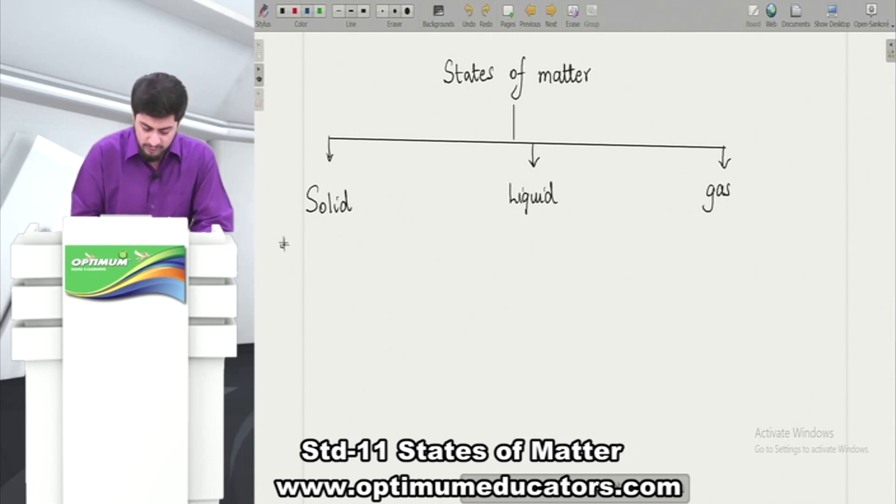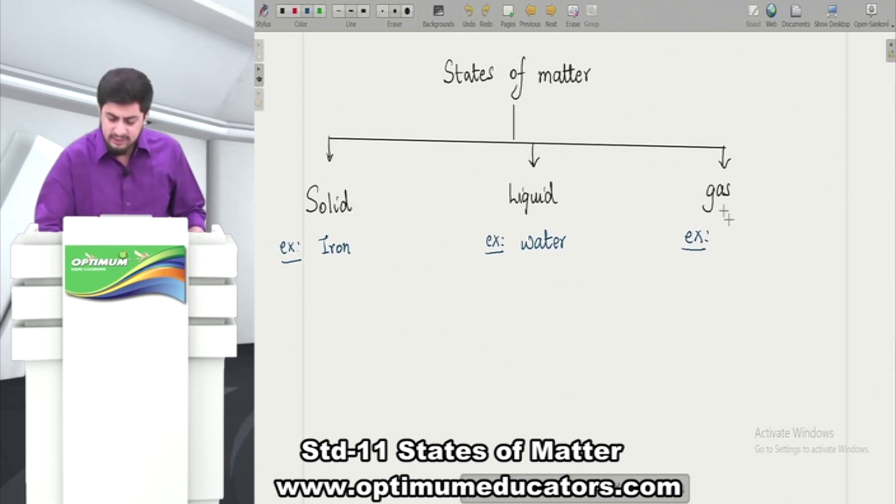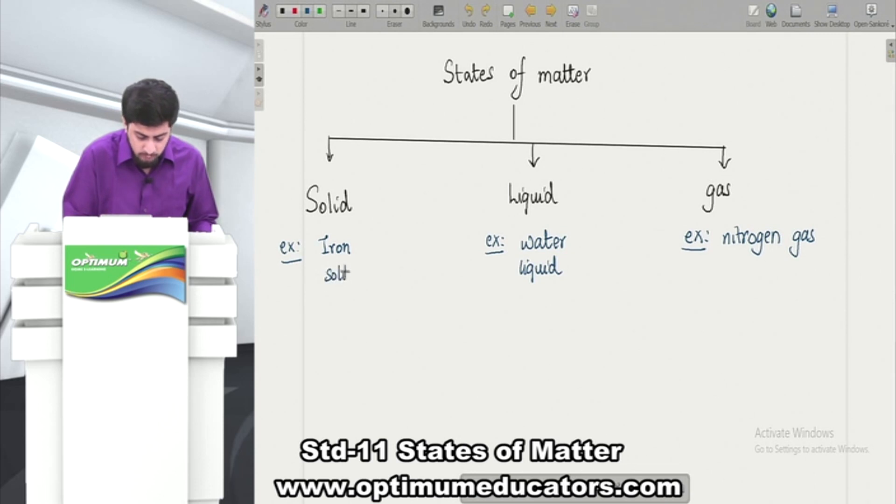I can give you many examples. For example, solid can be iron - iron is generally in solid form. Liquid - simple example is water. Gas - there are many gases, for example nitrogen gas. So at room temperature, at normal temperature, iron is solid, water is liquid, and nitrogen is basically a gas. Air is also an example of gas.